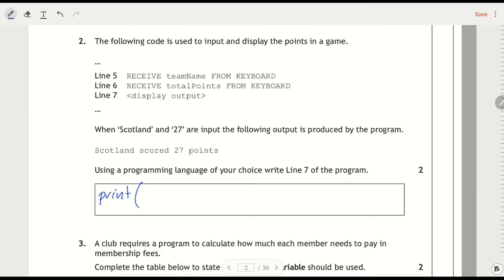So we've got team name and total points are our variables. I'm just going to get a highlighter here. So we've got team name and total points. If I'm going to write this code, it's not literally going to say Scotland scored 27 points, we're going to say team name scored total points points. So team name is Scotland, total points is 27.